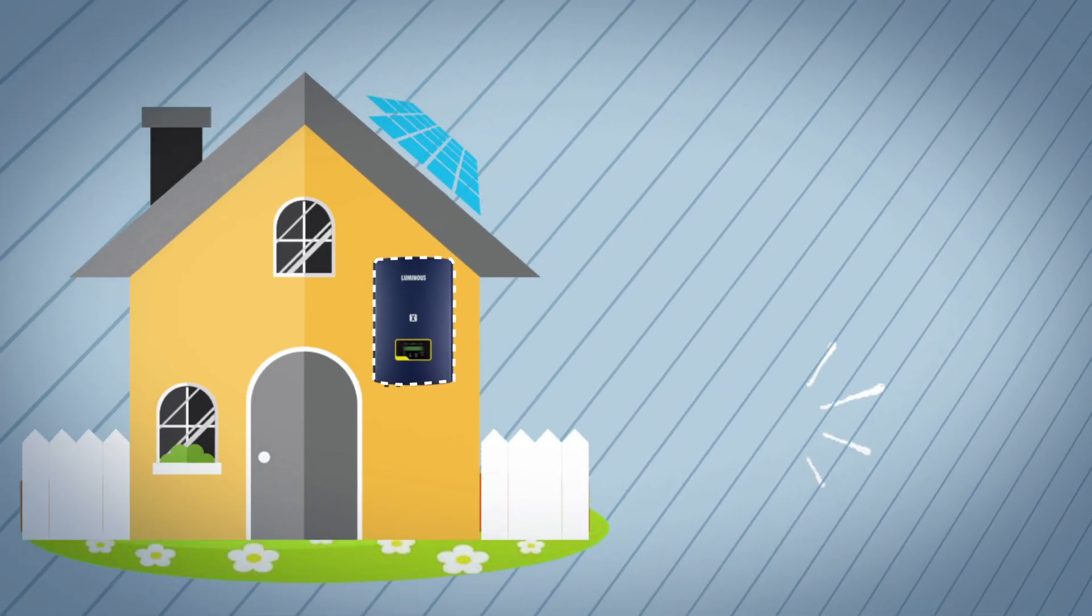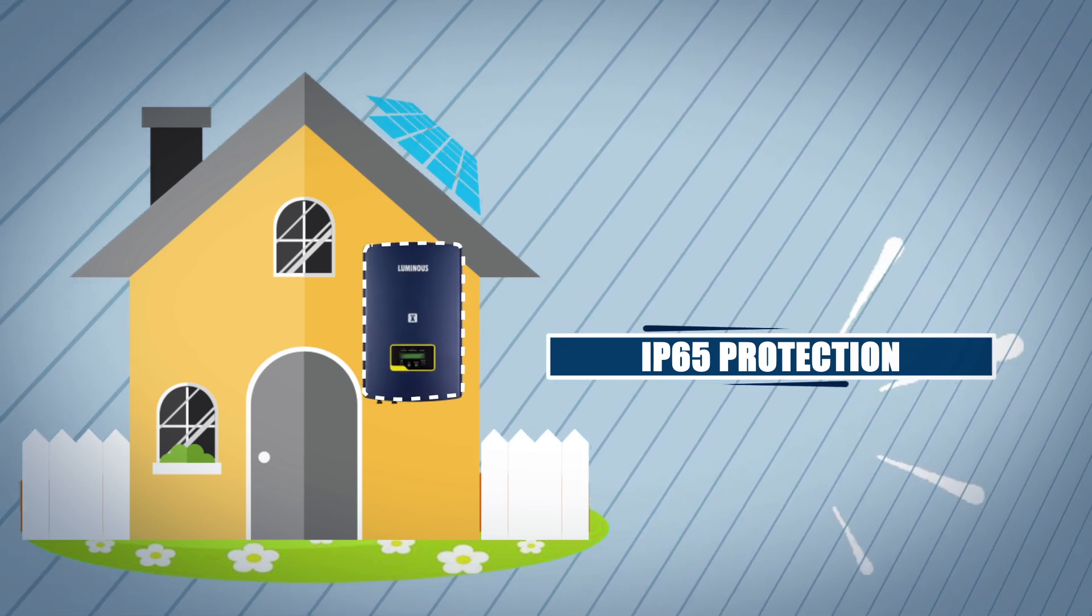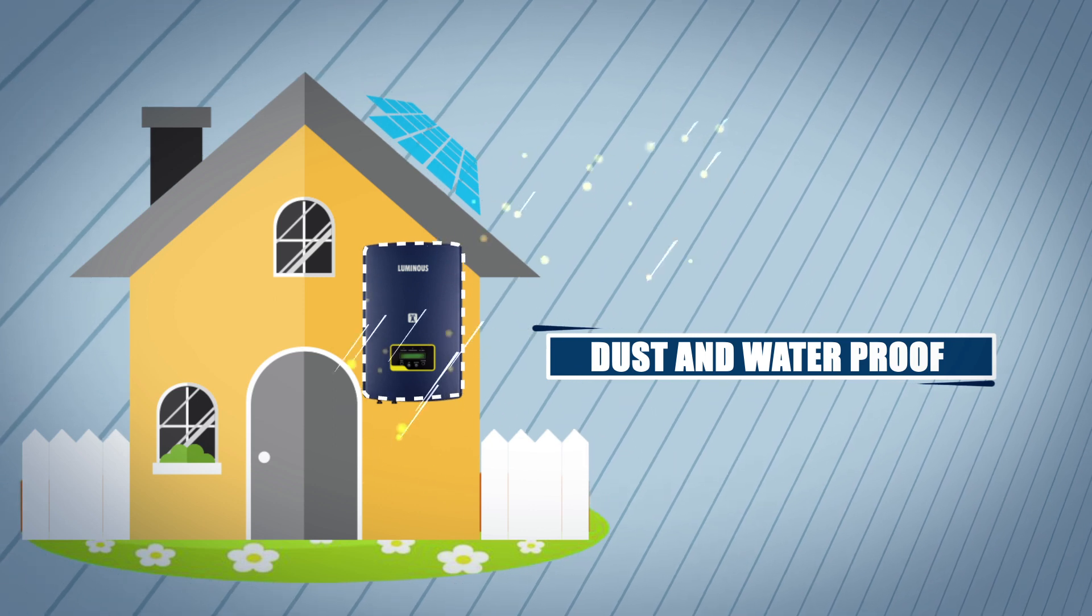Luminous Solar Grid Tie Inverter is an IP65 product which makes it completely dust and waterproof, allowing you to install it outdoors.